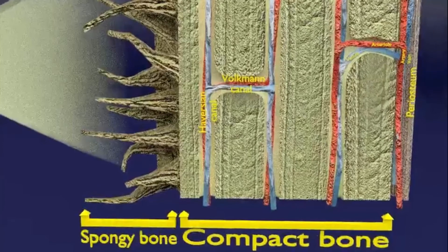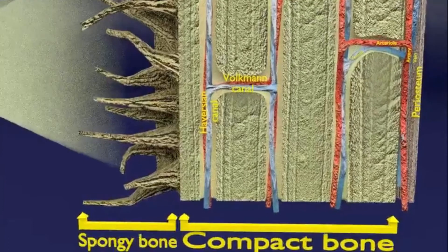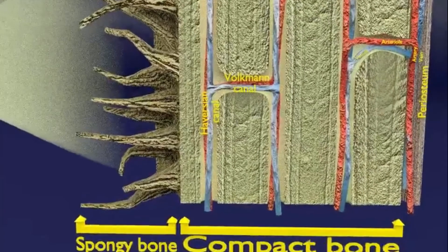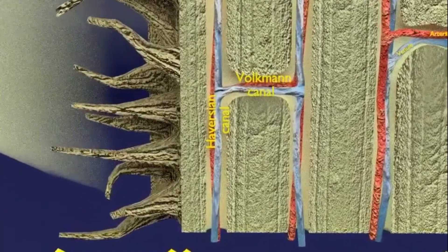The outer portion of the bone is formed by compact bone, also known as cortical bone. It has fewer cavities and is made up of osteones and their lamellae.